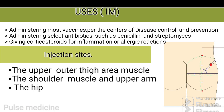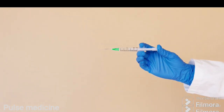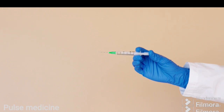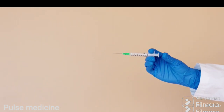Uses of intramuscular are: administering most vaccines per the Centers for Disease Control and Prevention, administering select antibiotics such as penicillin and streptomycin, and giving corticosteroids for inflammation or allergic reactions. Injection sites include the upper outer thigh area muscles and the shoulder muscles and upper arm. Avoid injecting into the patient's buttock area to prevent possible damage to the sciatic nerve.